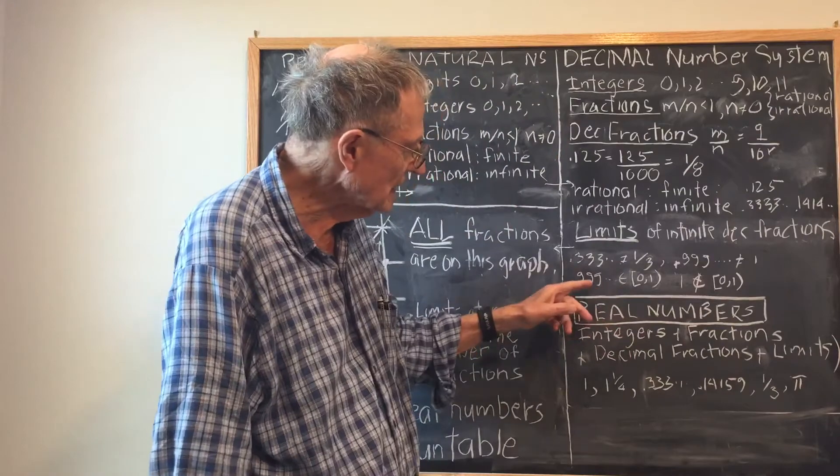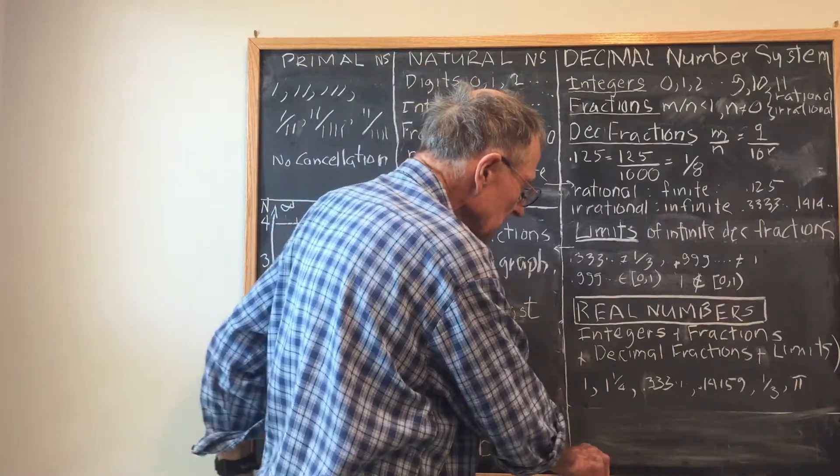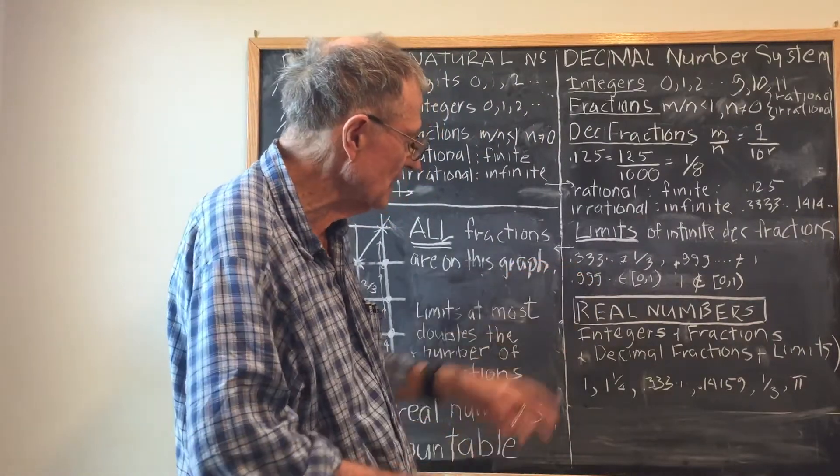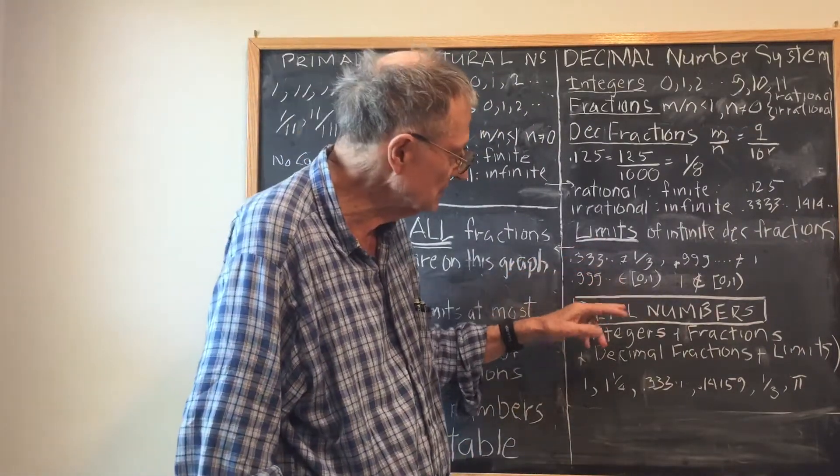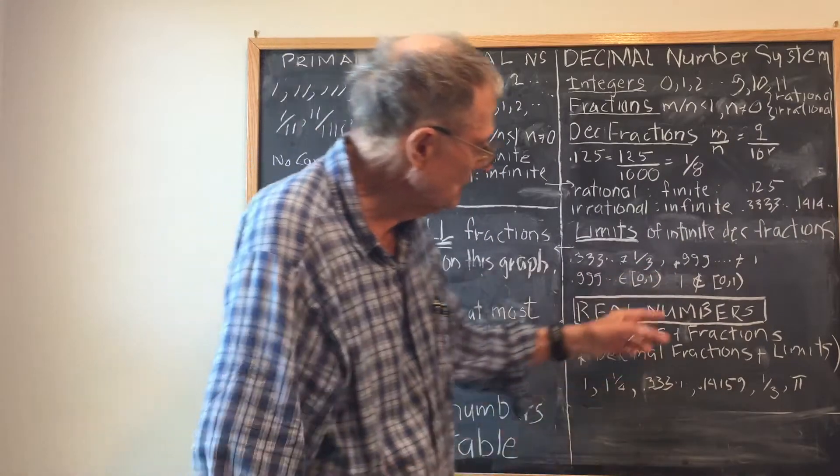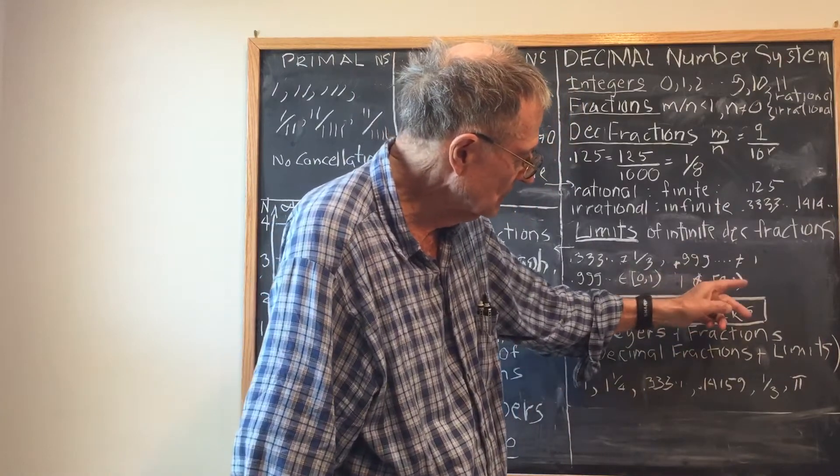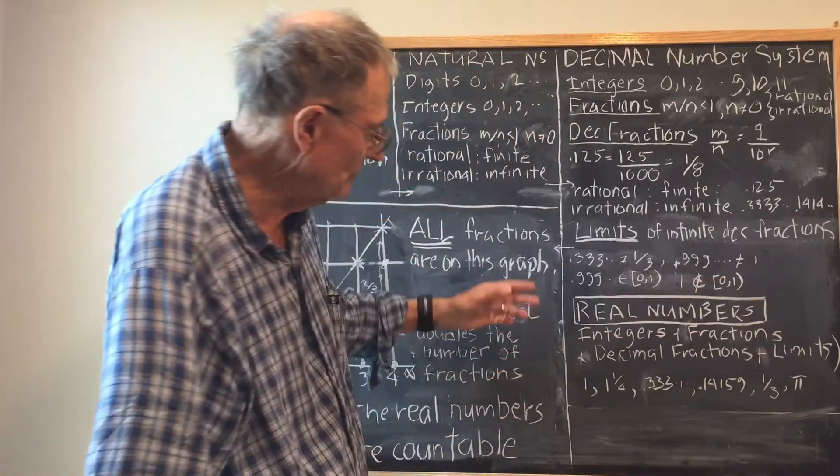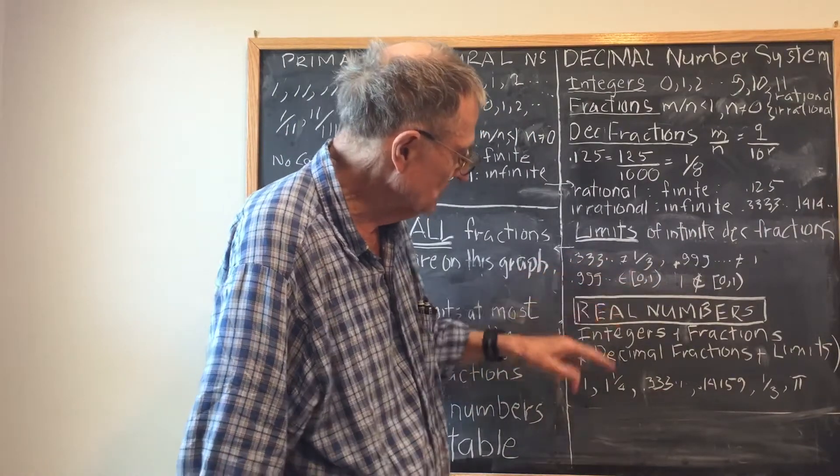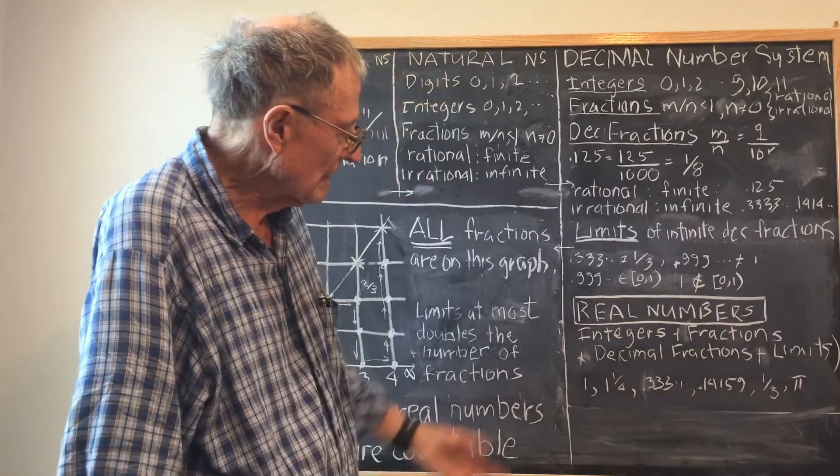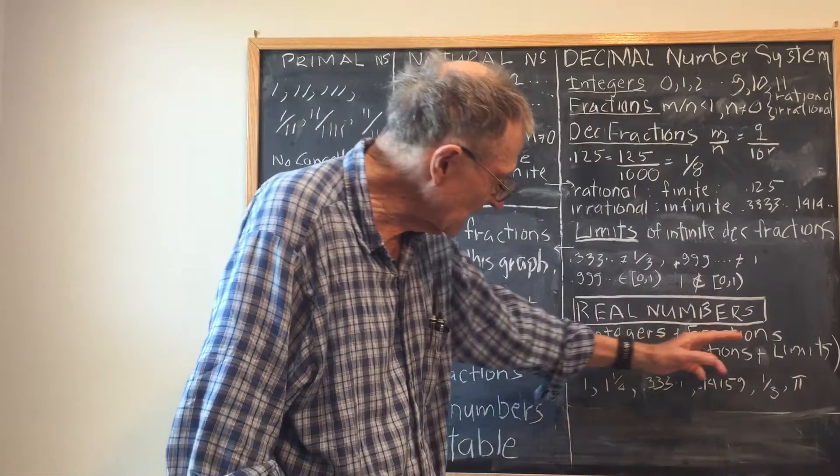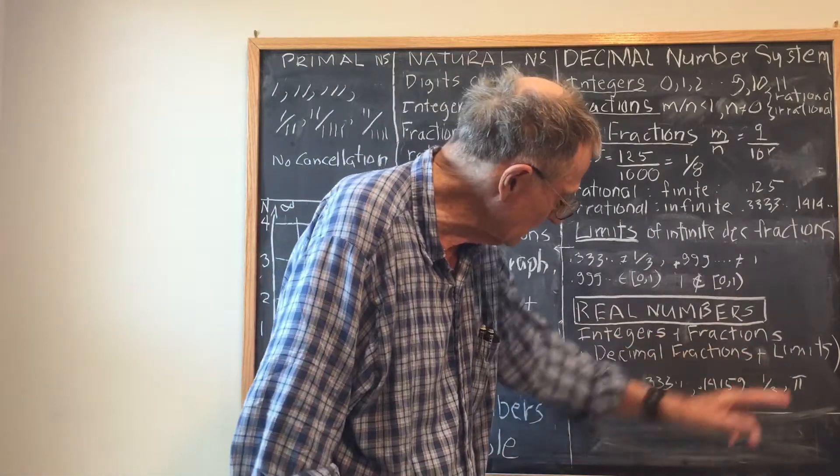0.999, no matter how many digits you have, always belongs to the interval (0, 1), the open interval on the right, and 1 never belongs to the same interval. So that's a major distinction between the infinite endless string and the limit of that endless string. The real numbers in summary consist of integers, plus fractions, plus decimal fractions, and limits.